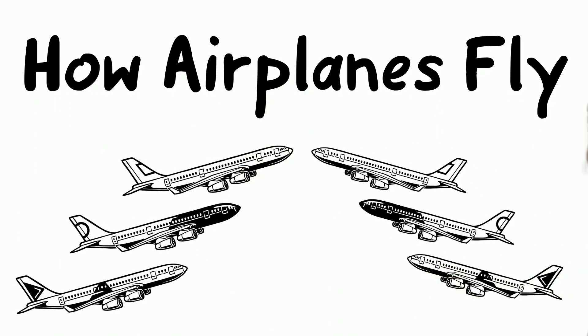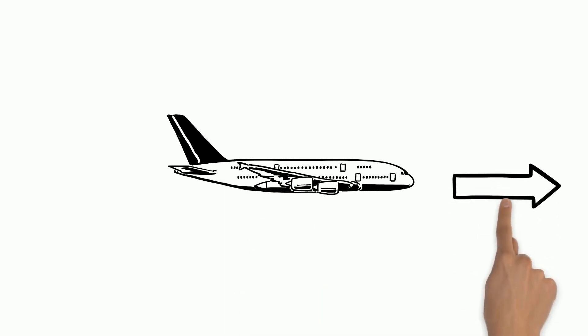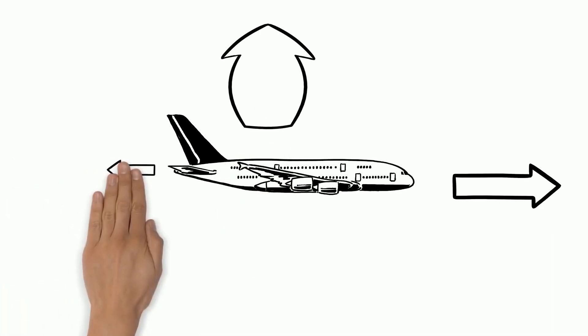How Airplanes Fly. Airplanes can fly generally because they can generate a force called lift and a force called thrust. These two forces are stronger than the drag and the weight force, and that is why the airplane can move forward and upward.